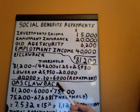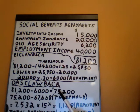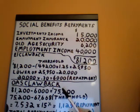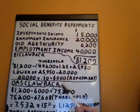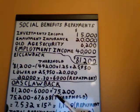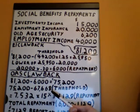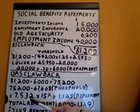Now we have the old age security clawback to calculate. We start with our $81,200 and deduct what's already been accounted for as a social benefit repayment — $6,000 — giving us $75,200. I should also note that in real life there would be additional adjustments for any income received from the universal child care benefit or the registered disability savings plan. If you had any of those, they would also be factored in, but for this example we don't. So for the old age security clawback, the threshold difference is $75,200 less $67,668, which works out to $7,532.